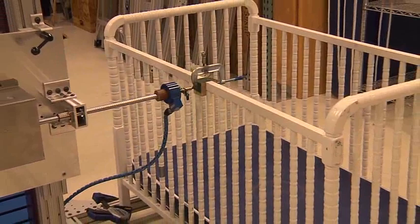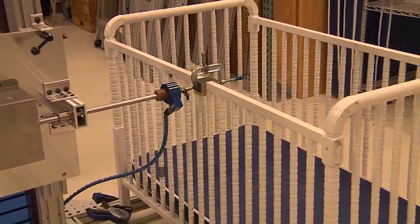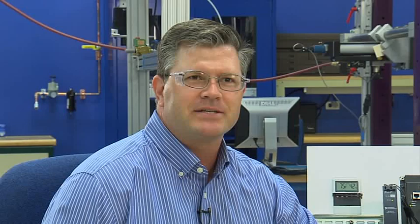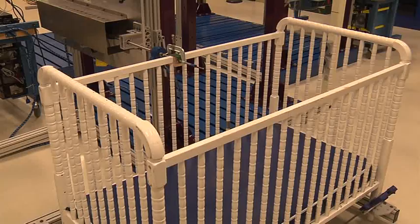This is a cyclic testing lab. What we do here is we simulate the lifetime of use for cribs, for example, by running them through our crib shaker test, crib impactor test, side rail impact test and then our slap test. And combined, these simulate a lifetime of use by a typical child out in the field.